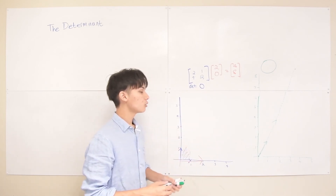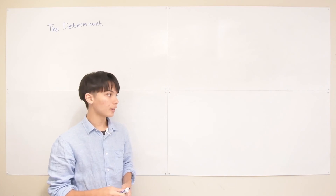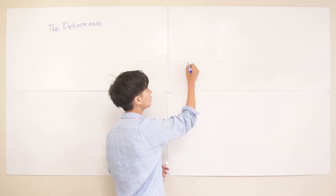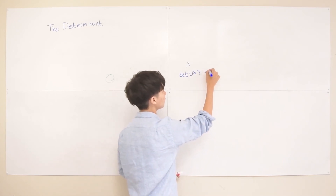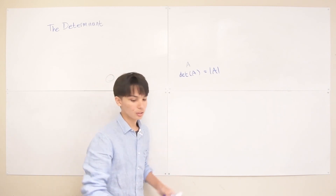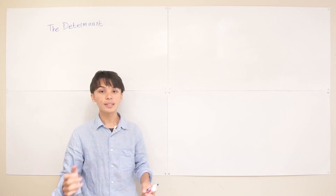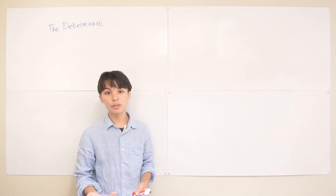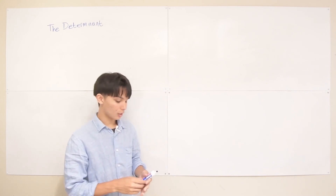Before talking about how to compute the determinant, it's important to mention notation. If we have some matrix A, we can display its determinant in two main ways: we can write det(A), or we can put two bars around A — |A|. Both denote the determinant of A. There are quick tricks to calculate determinants for small 2-by-2 and 3-by-3 matrices, but since in machine learning we often deal with large matrices, those tricks quickly become irrelevant.